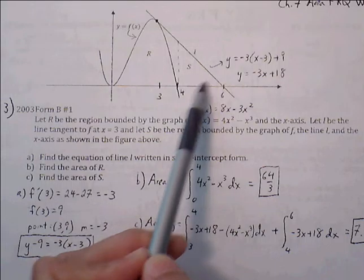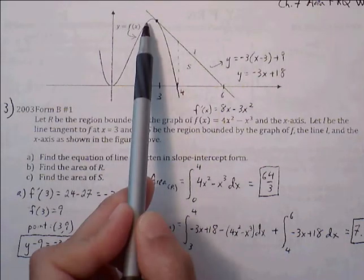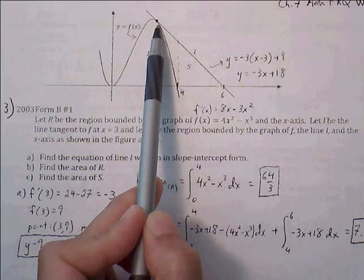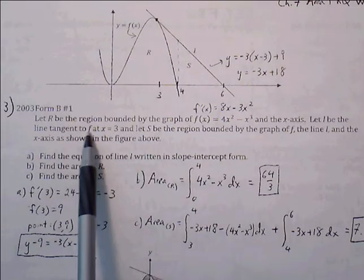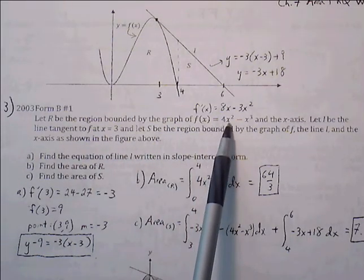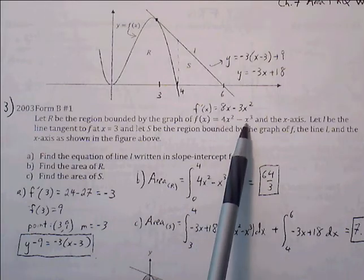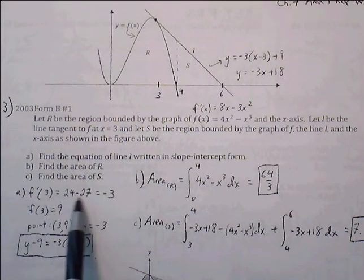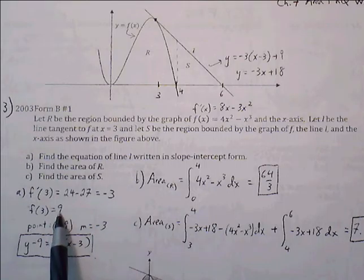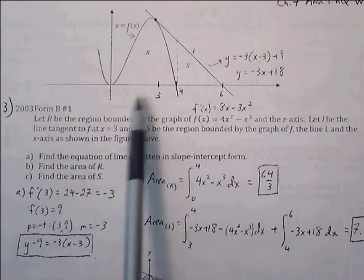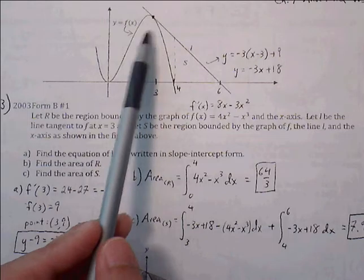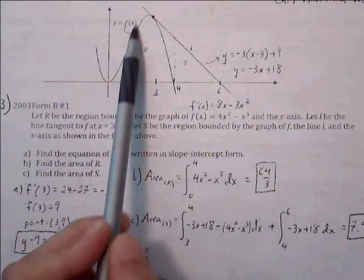We know a point on this curve is going to be at x equals 3. If I plug 3 into the curve, I can find the y-value, which will also act as an ordered pair for the tangent line. Plugging 3 into f of x: 4 times 3 squared minus 3 cubed gives us 24 minus 27... actually that gives us 9. So the ordered pair is (3, 9). To find the slope, we find the derivative of f of x and evaluate it at that point.